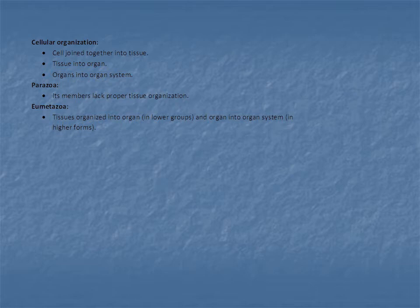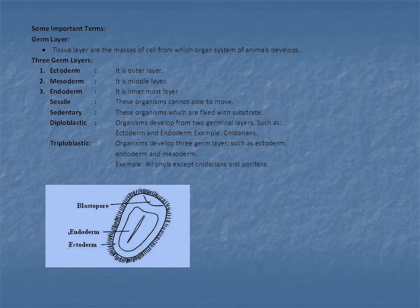Cellular organization: cells join together to form tissue; groups of tissues form organs; groups of organs form organ systems. Kingdom Animalia is divided into two parts — Parazoa and Eumetazoa. Parazoa are members of Animalia that lack proper tissue organization, like Porifera. Eumetazoa are those which have true organization of tissues and organs, and in higher forms, organs form organ systems — like Cnidaria.